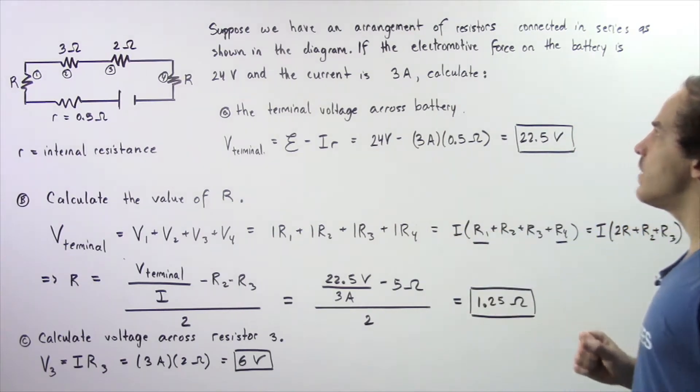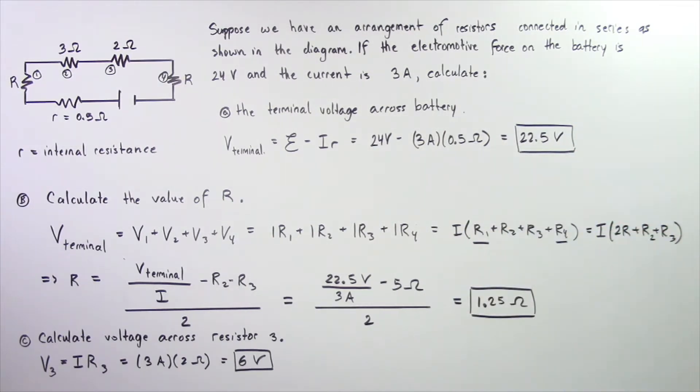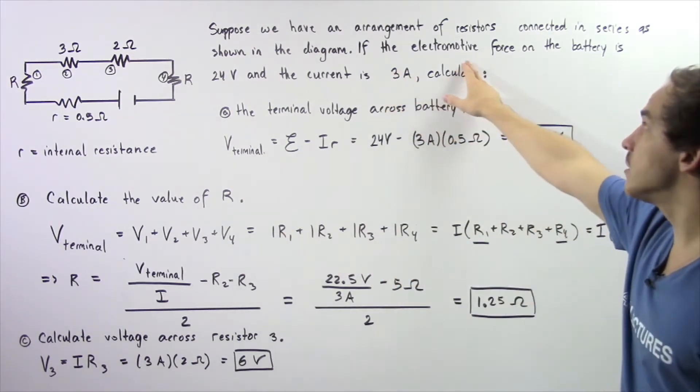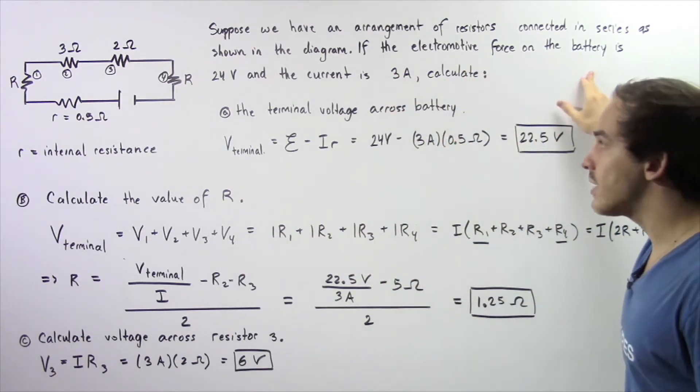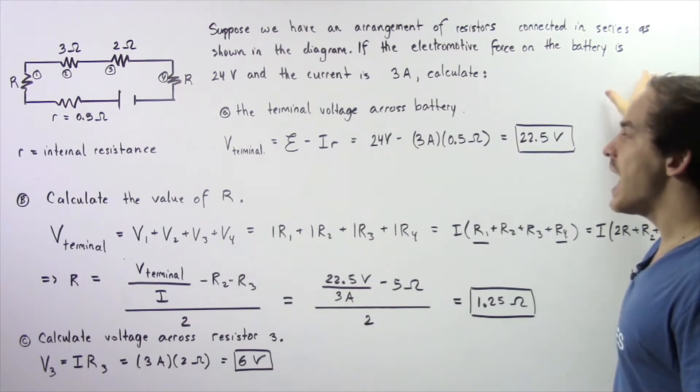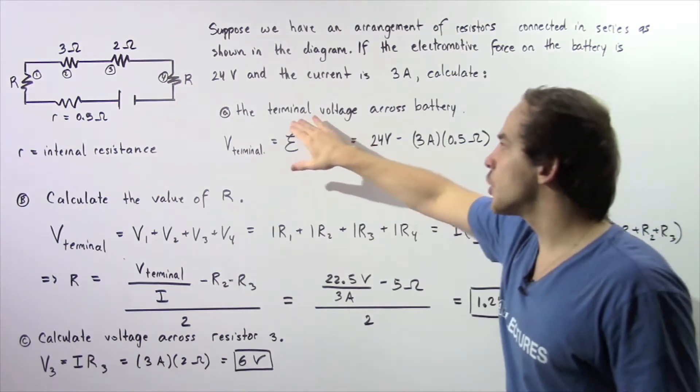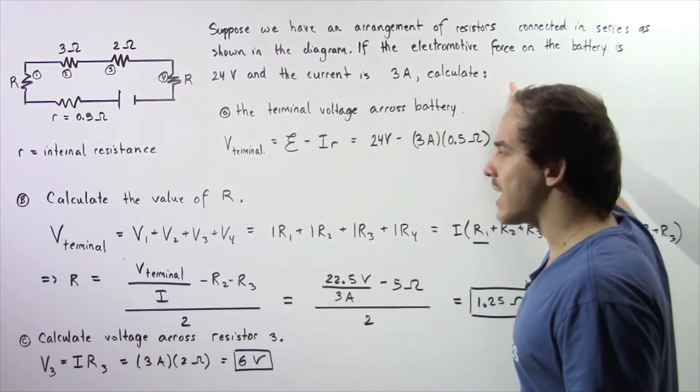Suppose we have an arrangement of resistors connected in series as shown in the following diagram. So if the electromotive force on the battery is 24 volts and the current is 3 amps, calculate in part A the terminal voltage across the battery.